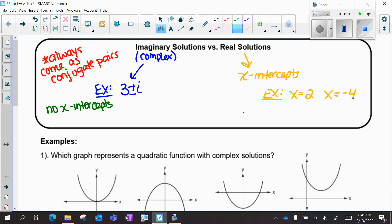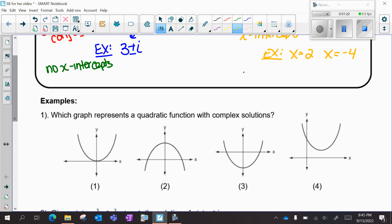So let's take a look at the example. Which graph represents a quadratic function with complex solutions? Complex solutions - I should have a chain of events that goes off in my head. Complex is the same thing as imaginary, which means no x-intercepts. So if I'm looking at these four graphs, I have an x-intercept, two x-intercepts, two x-intercepts, and then choice four has no x-intercepts. So that is the quadratic function with complex roots.